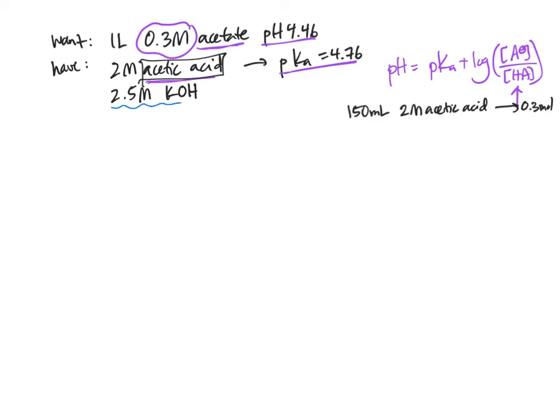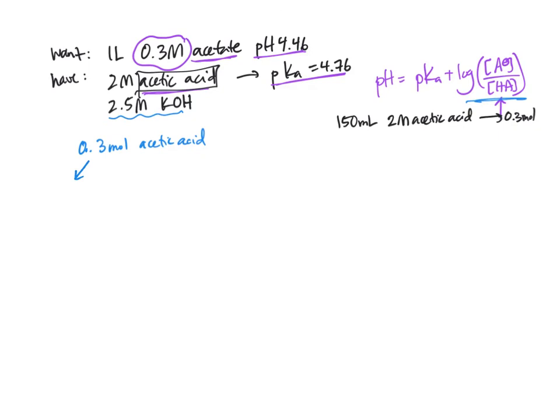Next, what do we do with this KOH? Recall now, we have 0.3 moles of acetic acid, and based on our Henderson-Hasselbalch equation, we want to convert 0.1 moles of this acetic acid into acetate and leave 0.2 moles as acetic acid. How do we convert this 0.1 mole into acetate? Simple. We'll add 0.1 moles of KOH, and that will combine together to form 0.1 moles of acetate.